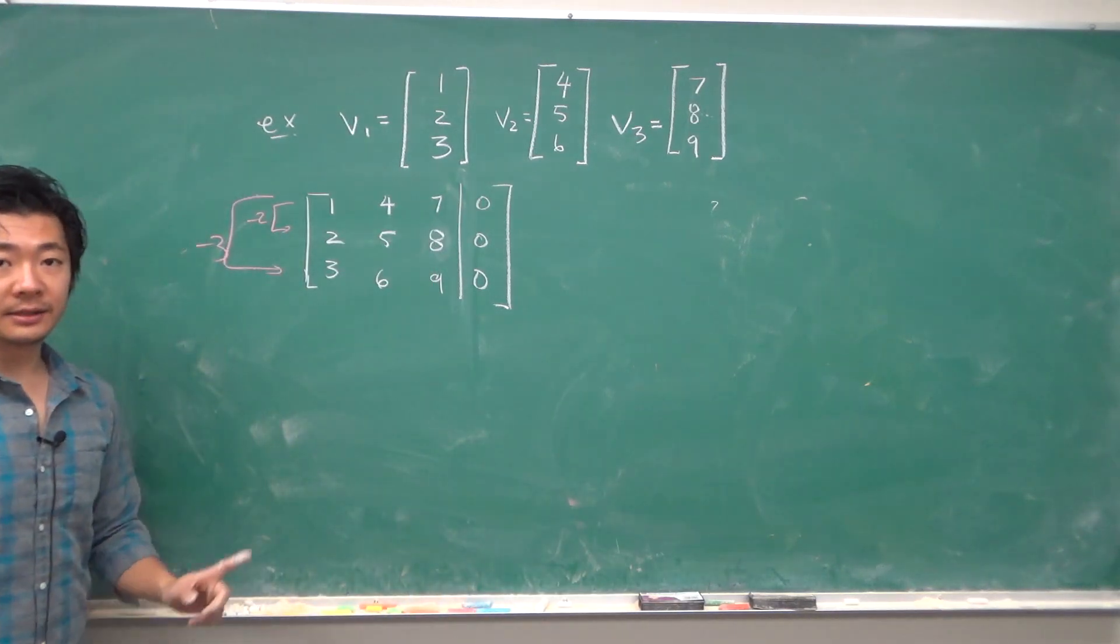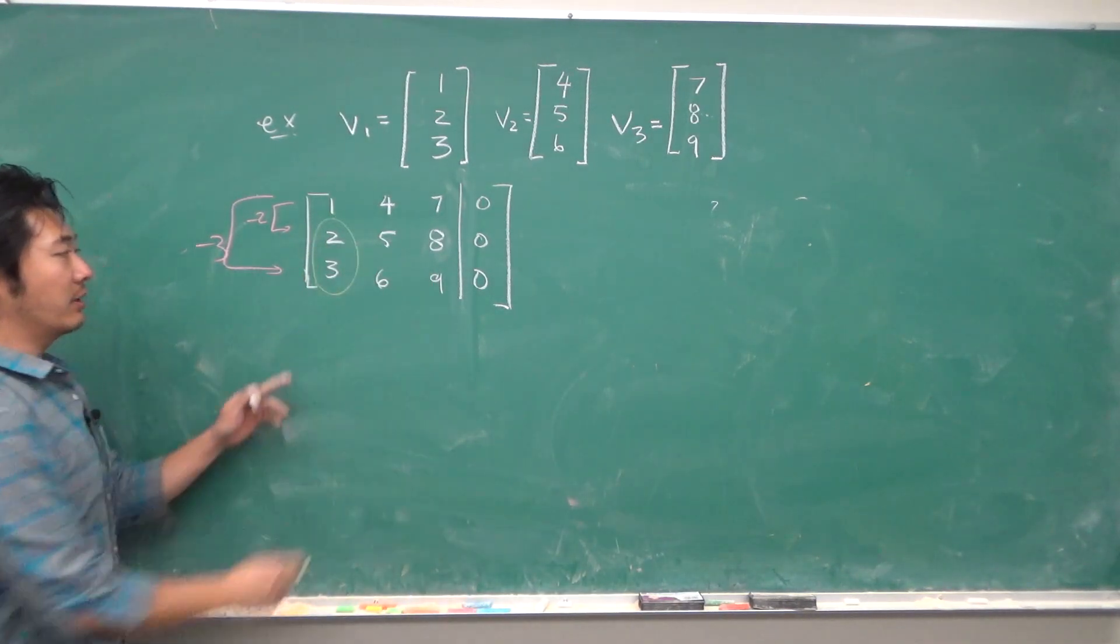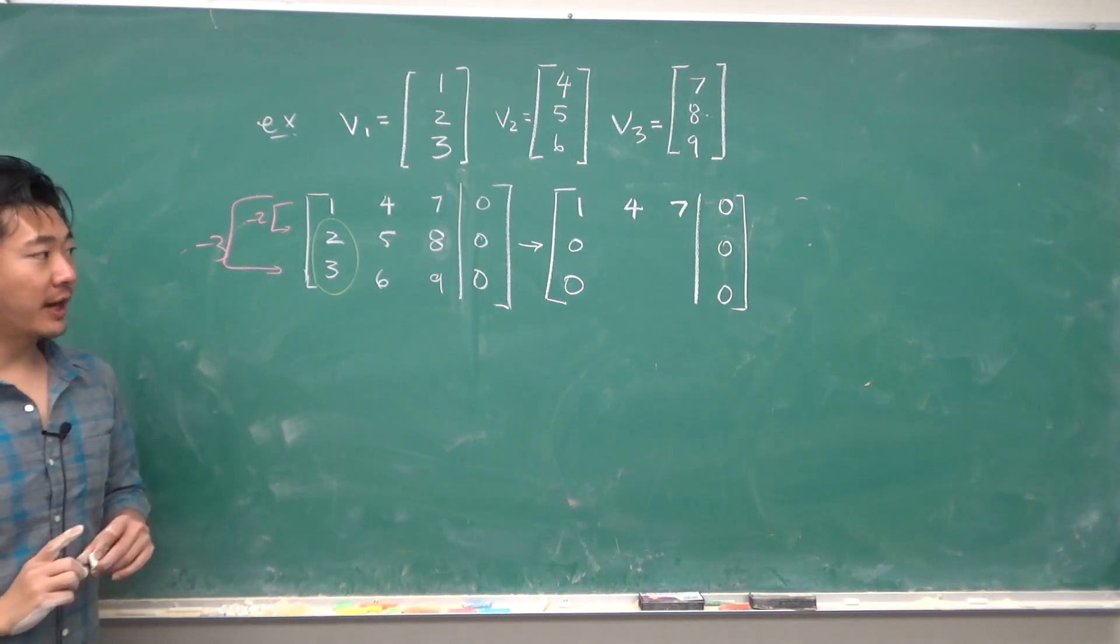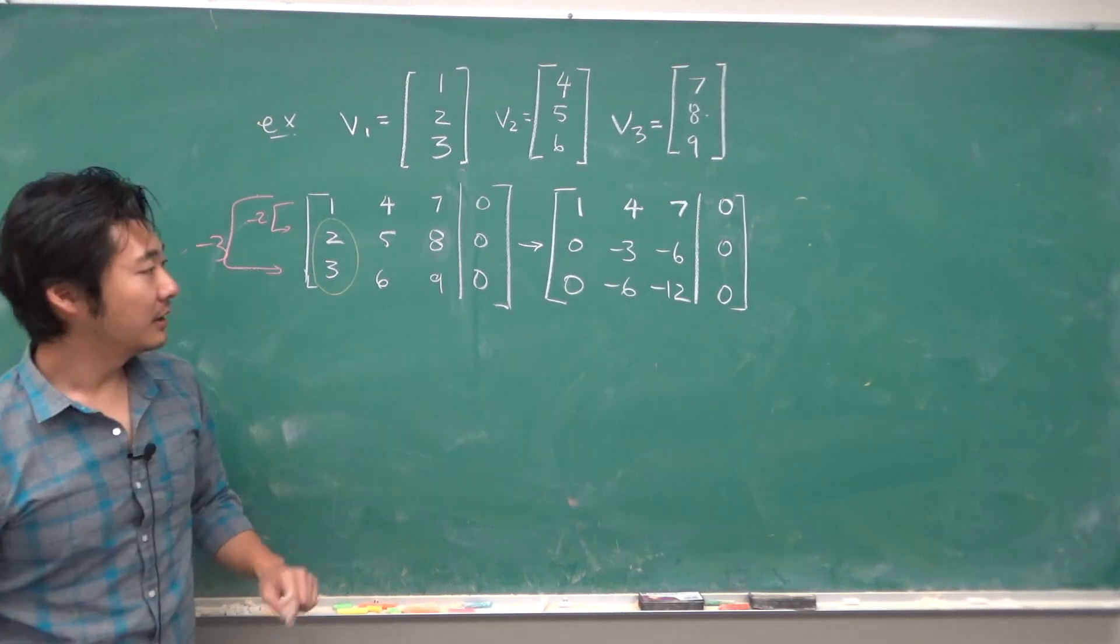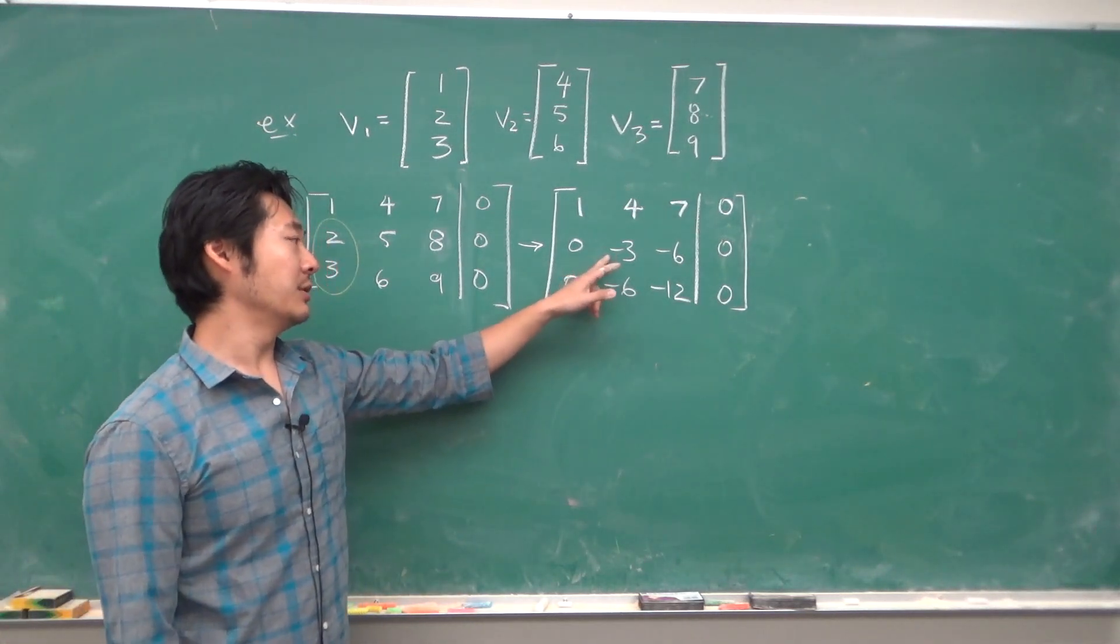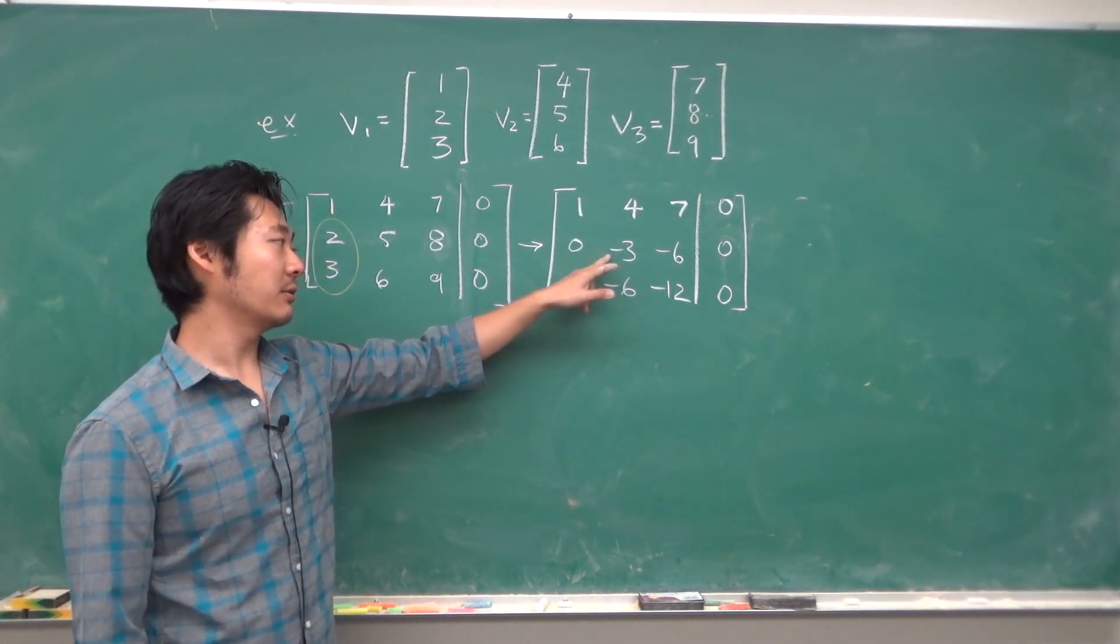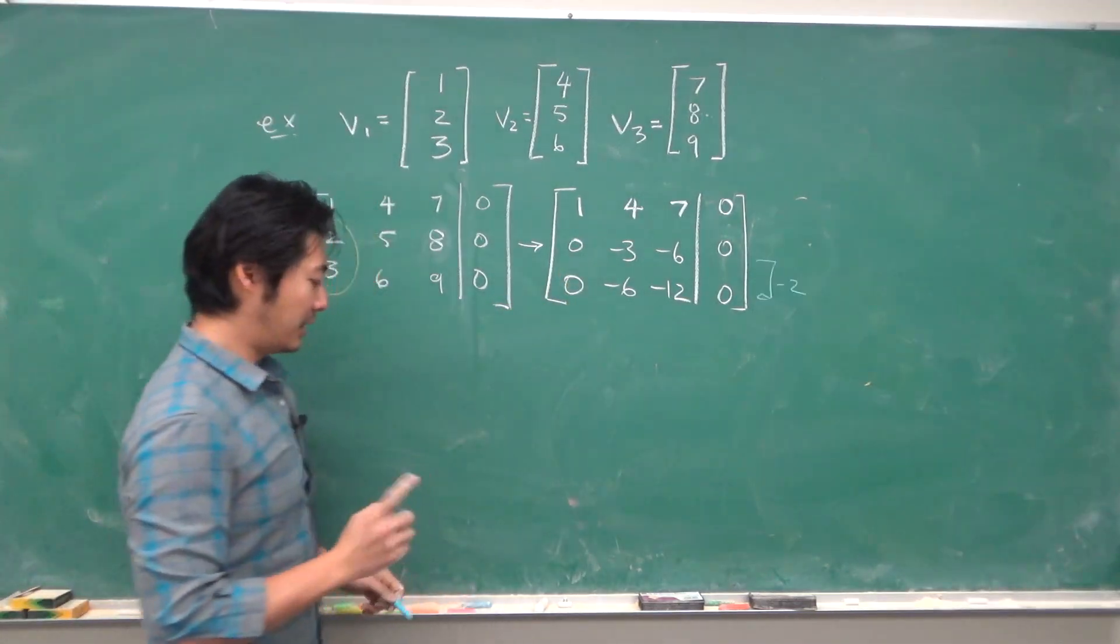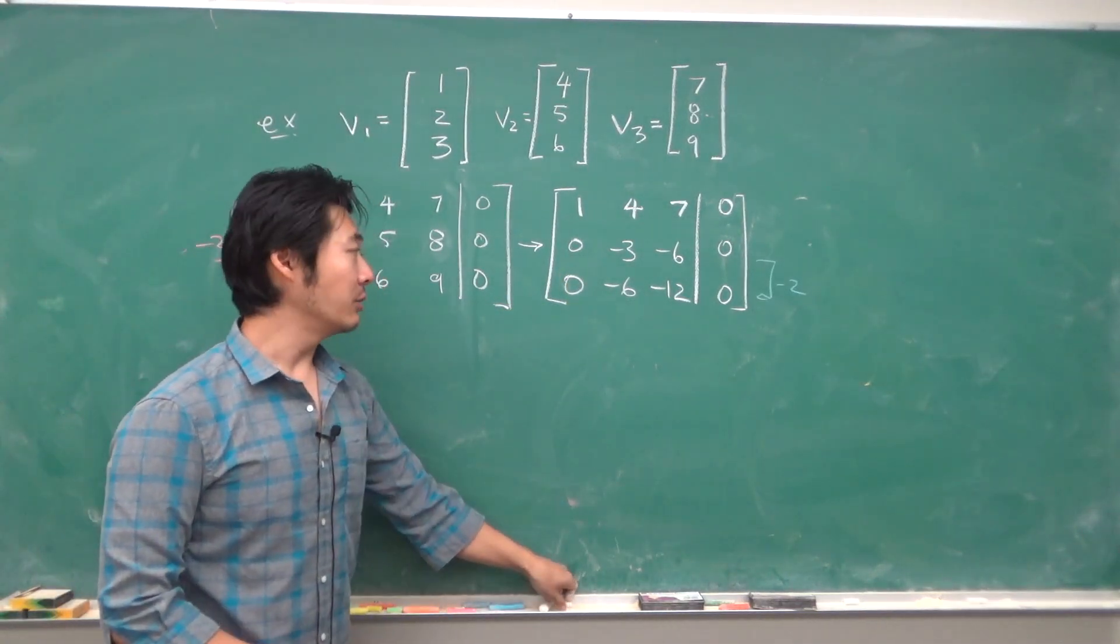The first step is the same: we want to get rid of these two entries, make them 0. After row reduction we'll get something like this. Now we can do negative 2 times the second row and add into the third, but this time notice that we get something like this.